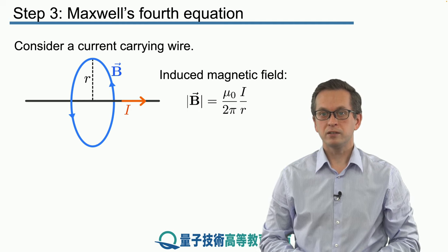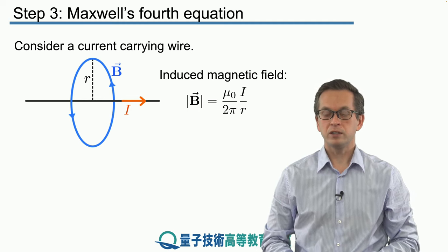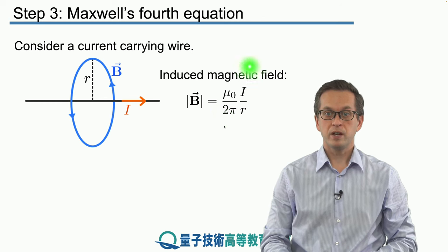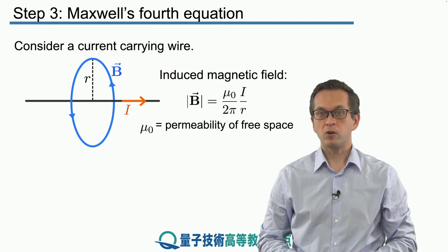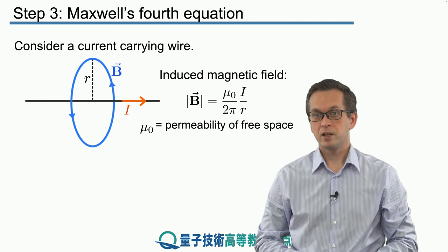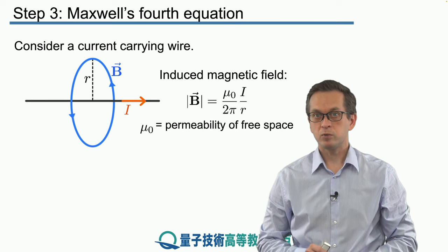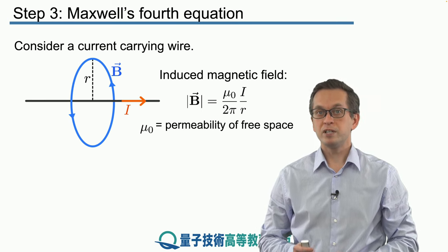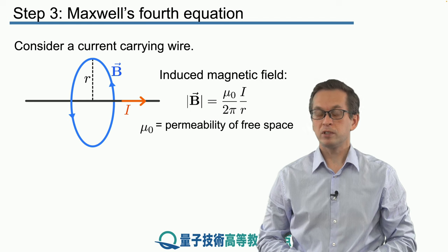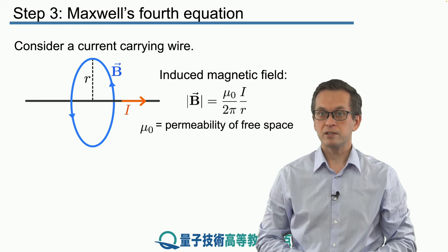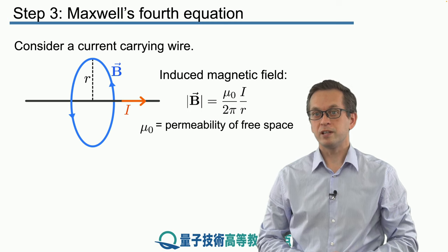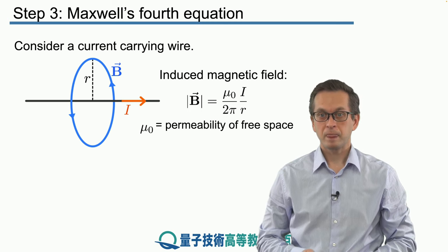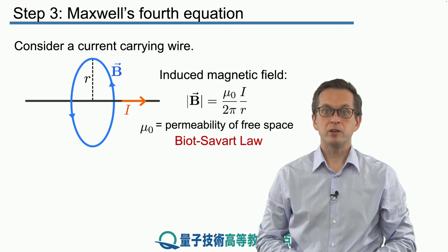We know that the induced magnetic field — the magnitude of the induced magnetic field — is given by the following expression: it's μ₀ over 2π times I over r. μ₀ is just a constant called the permeability of free space. Don't confuse it with ε₀, which is the permittivity of free space. ε₀ is related to electric fields, while μ₀ is related to magnetic fields. This expression is known as the Biot-Savart law.